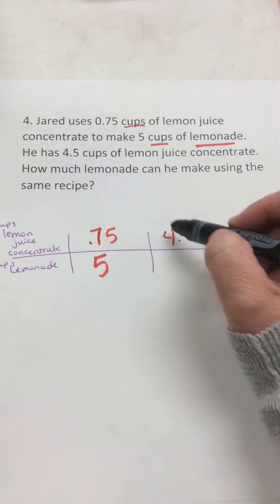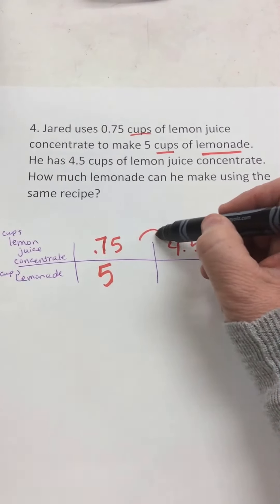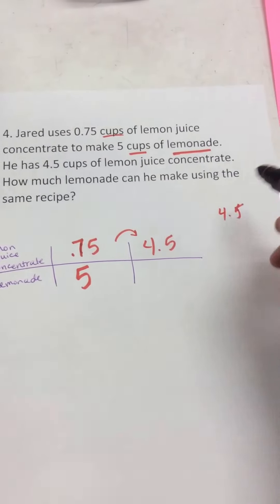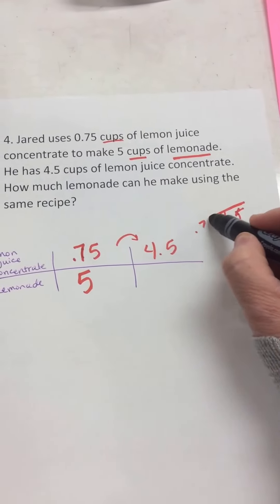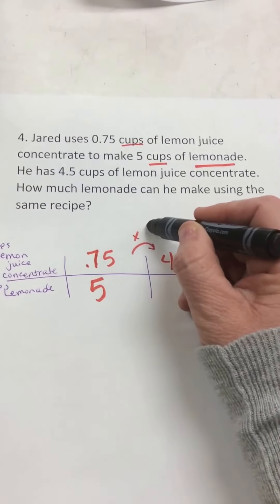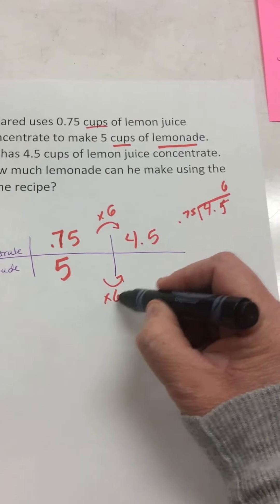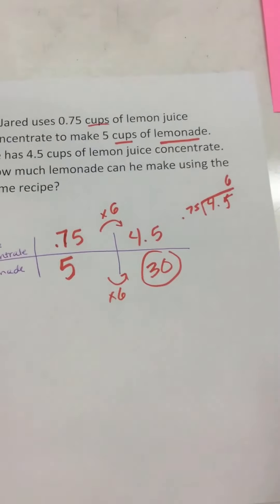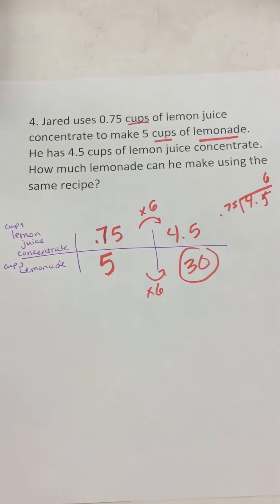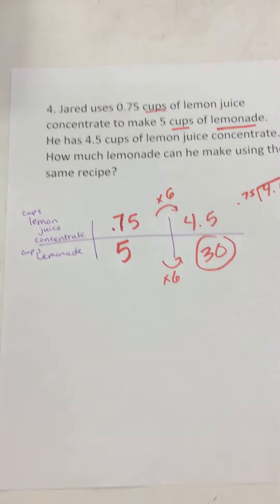I don't see the relationship directly, but if I ask: 0.75 times what equals 4.5? I do that division and get six. So 0.75 times six is 4.5. What is five times six? 30. He can make 30 cups of lemonade if he has four and a half cups of lemon juice. Now that you've corrected all these on your paper, you have three more to answer before the timer goes off.